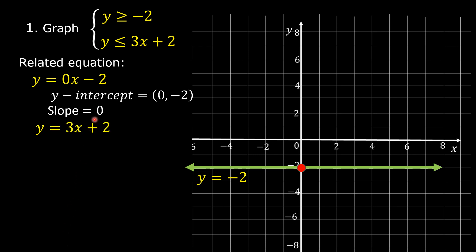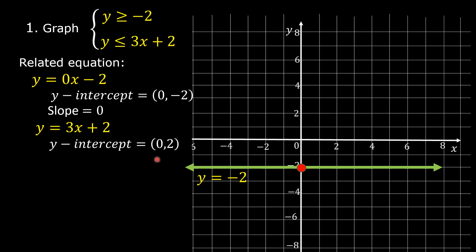The related equation of the second linear inequality y is less than or equal to 3x plus 2 is y is equal to 3x plus 2. The constant term positive 2 is the y-intercept, and the coefficient of x, which is 3, is the slope. So the y-intercept is point (0, 2) and the slope is equal to 3, or 3 over 1. Let us plot point (0, 2) on the coordinate plane. This is point (0, 2).